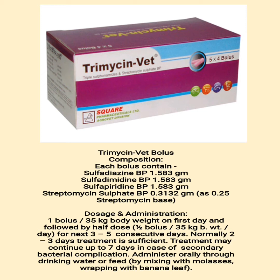Trimicin vet bolus — composition: each bolus contains sulfadiazine BP 1.583 g, sulfadimidine BP 1.583 g, sulfapyridine BP 1.583 g, streptomycin sulfate 0.3132 g as 0.25 g streptomycin base. Dosage and administration: 1 bolus per 35 kg body weight on first day, followed by half dose, 1.5 bolus per 35 kg body weight per day for next 3 to 5 consecutive days. Normally 2 to 3 days treatment is sufficient. Treatment may continue up to 7 days in case of secondary bacterial complication. Administer orally through drinking water or feed, by mixing with molasses or wrapping with banana leaf.